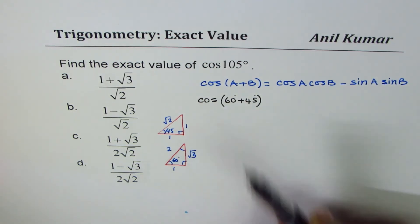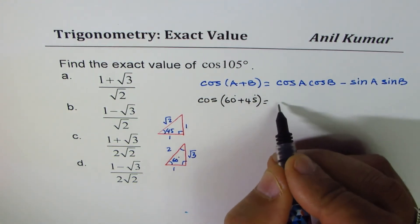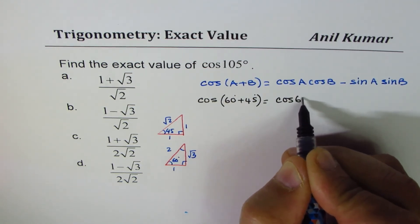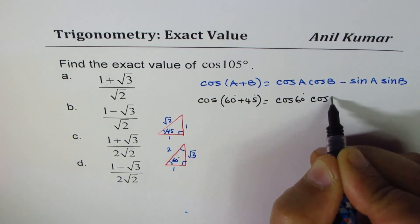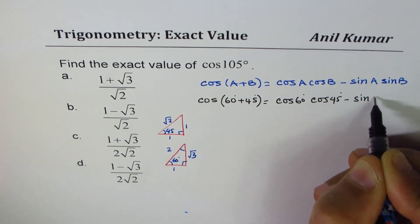You can pause the video, further simplify the expression and get the required answer. Let's use this formula to expand. So we get cos 60 cos 45 degrees minus sin 60 degrees sin 45 degrees.